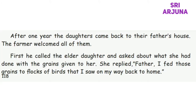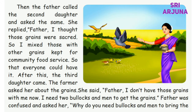He asked them to use the grains in the best way possible and then come back to him after one year. After one year, the daughters came back to the father's house. The father welcomed all of them. First, he called the elder daughter and asked what she had done with the grains given to her. She replied, 'Father, I fed those grains to a flock of birds that I saw on my way back home.' Then the father called the second daughter and asked the same. She replied, 'Father, I thought those grains were scarce, so I mixed them with other grains kept for community food service so that everyone could have it.'